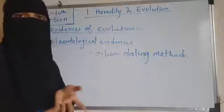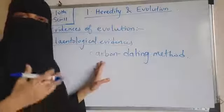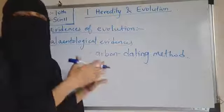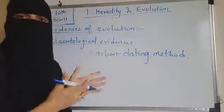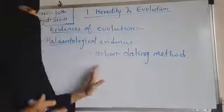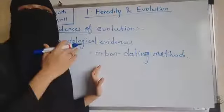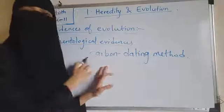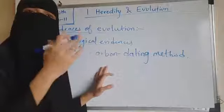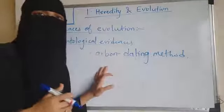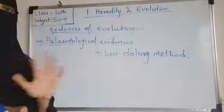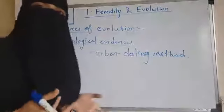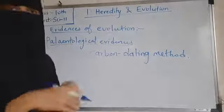From carbon dating we can come to know which era or period a buried fossil belongs to. This is how paleontology provides evidence of evolution — through the carbon dating method we can find out which animals belong to which period. Once the age of a fossil is determined by such a technique, it becomes very easy to deduce information about other organisms.